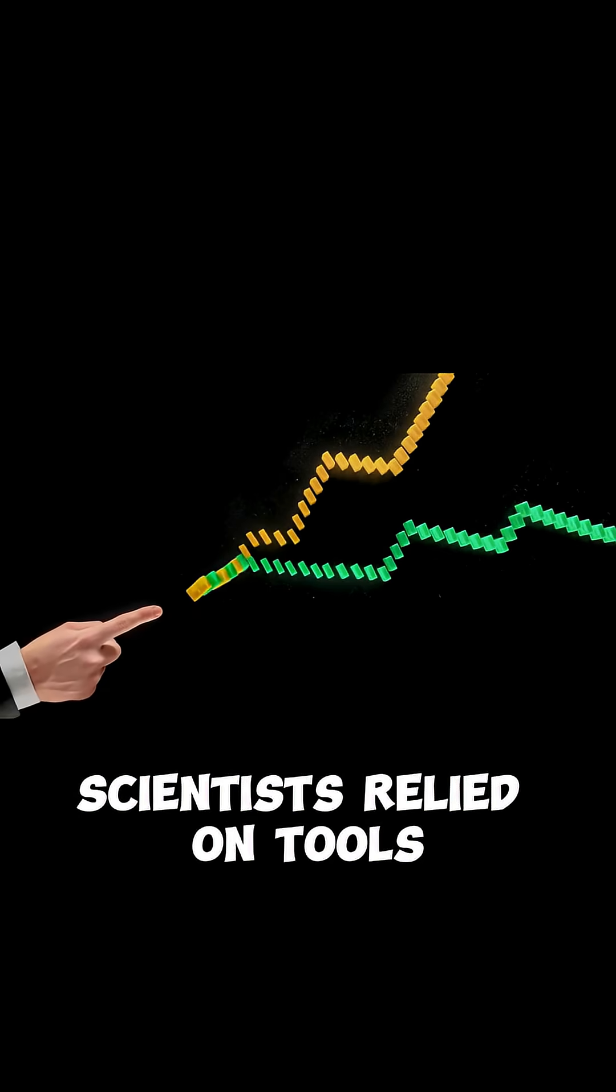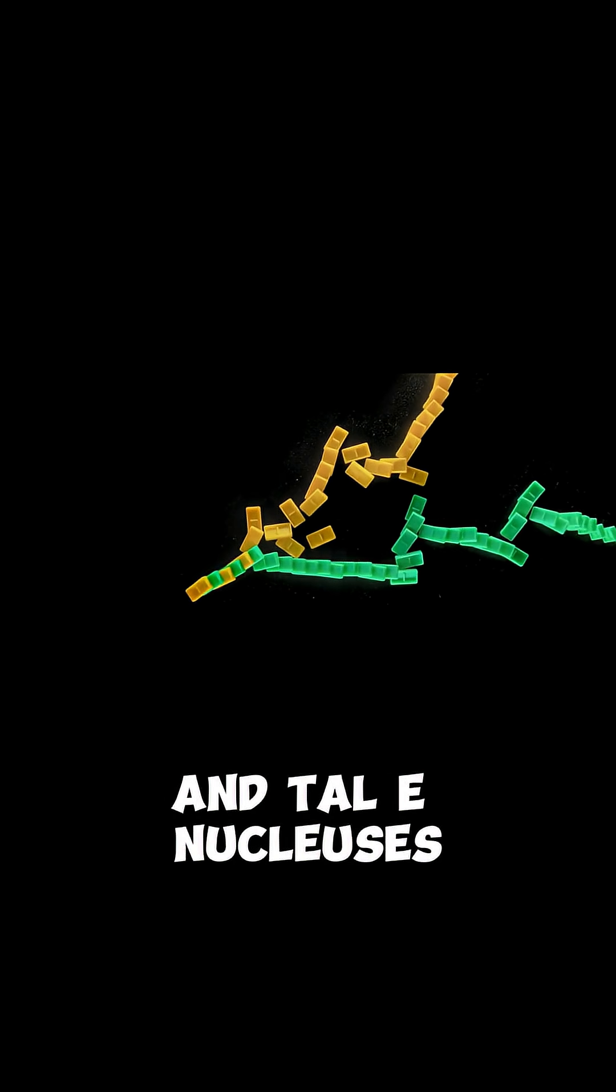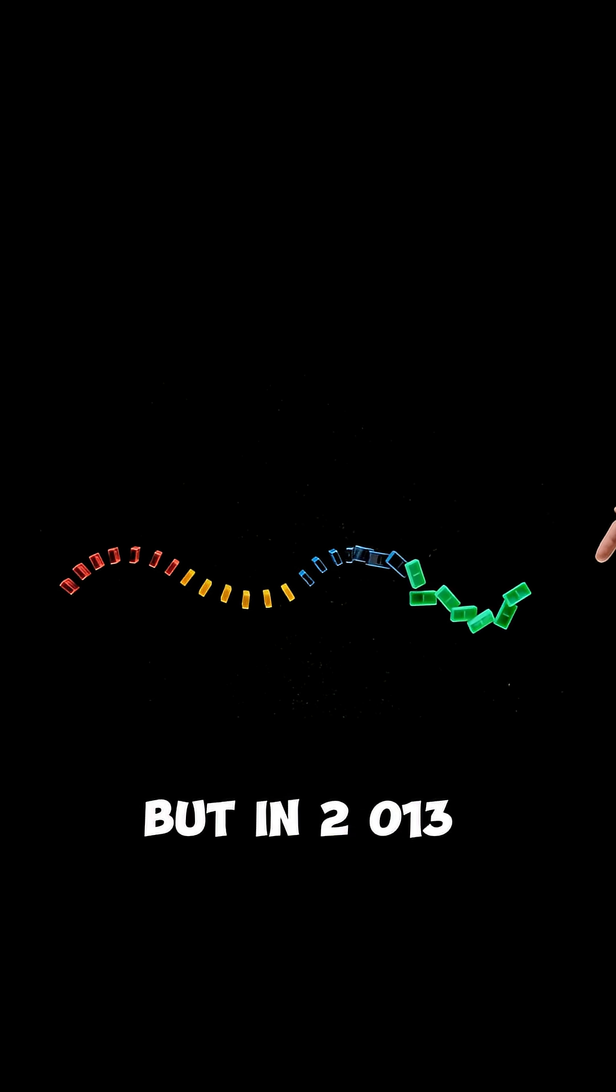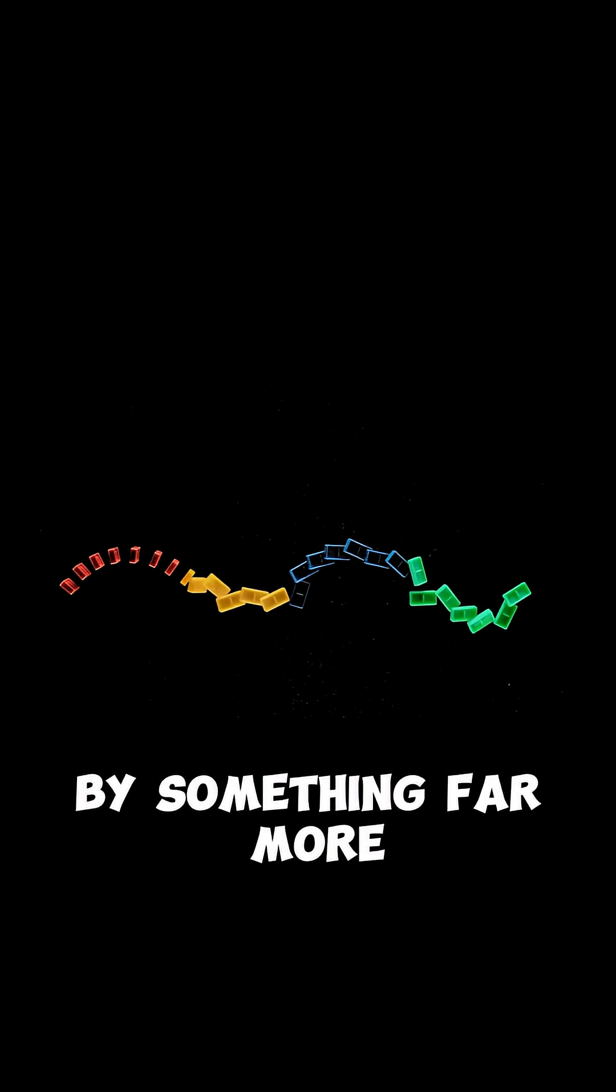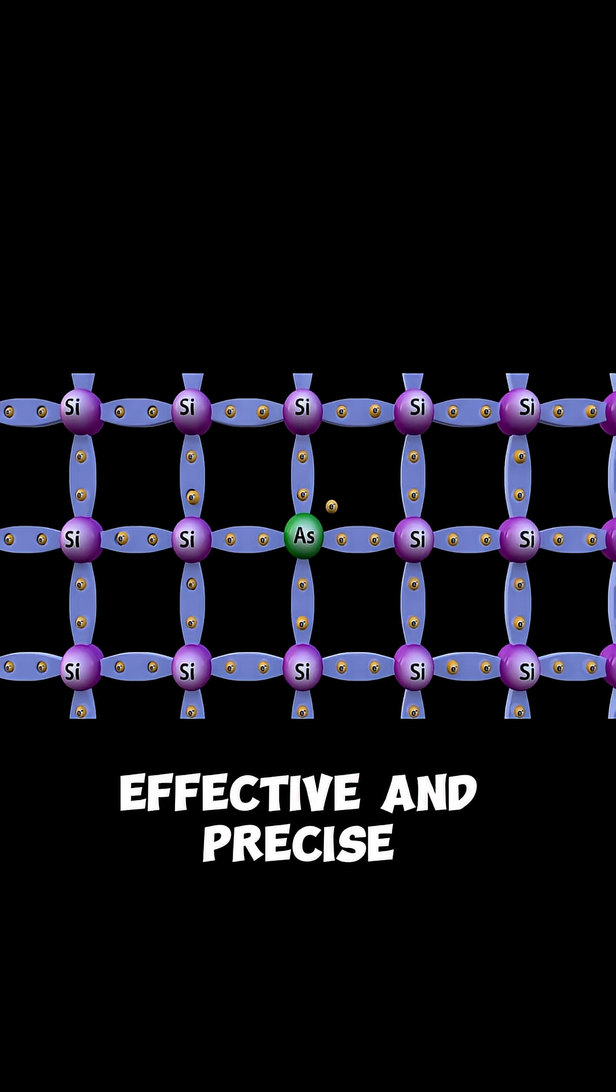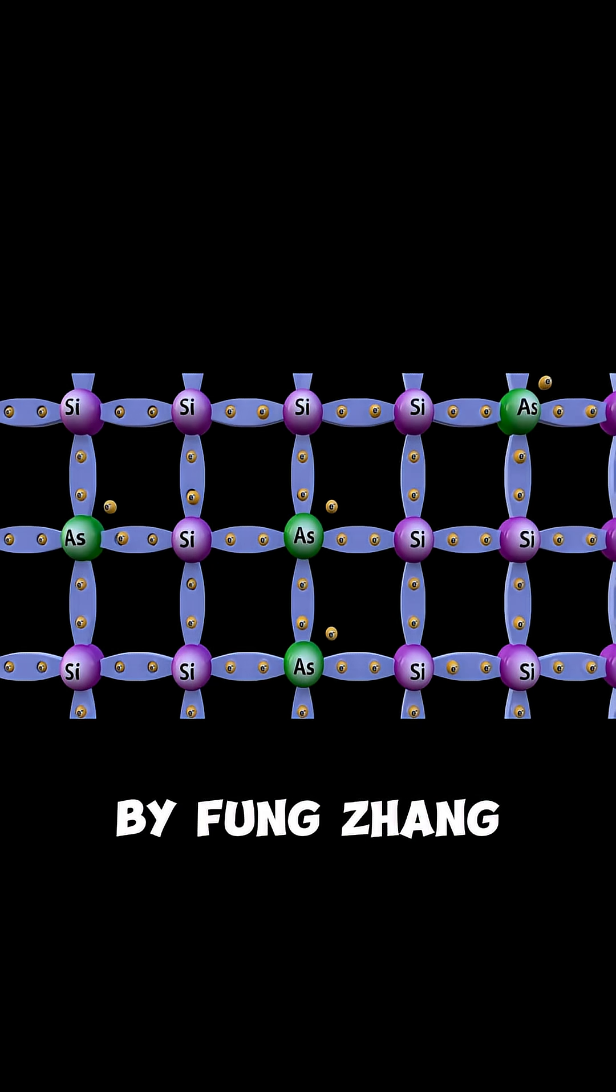For years, scientists relied on tools like zinc finger nucleases and TALE nucleases for genome editing. But in 2013, those were outshined by something far more efficient, effective, and precise: the CRISPR-Cas9 system, first adapted for mammalian cells by Feng Zhang at the Broad Institute and MIT.